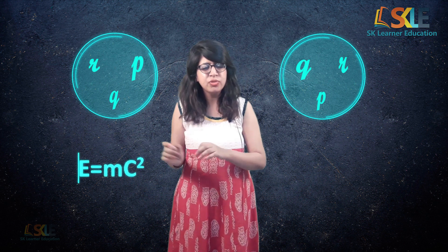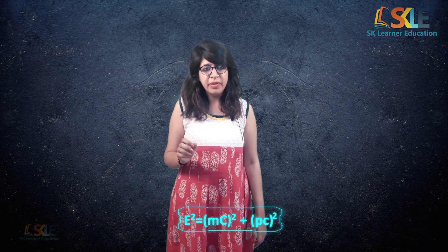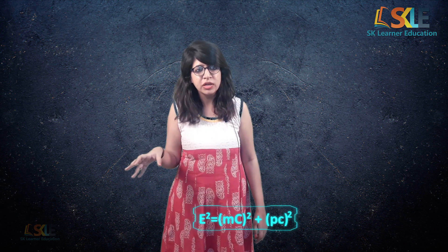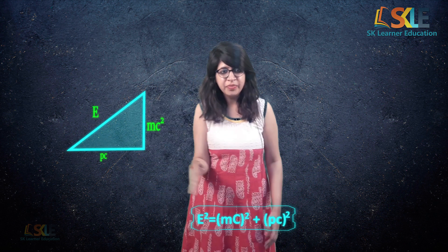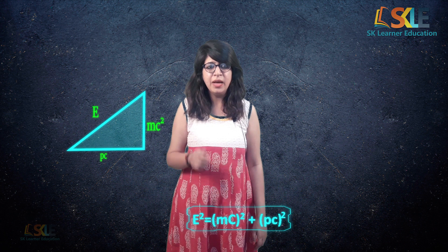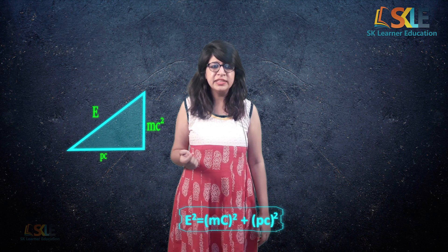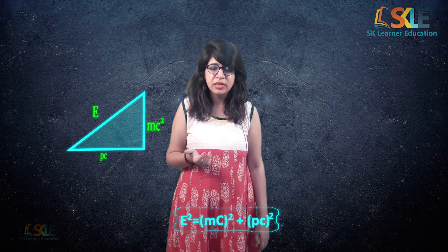Is E equals mc squared a complete equation? No. The exact equation is E squared equals m squared c to the fourth plus p squared c squared. From this equation we know that momentum also plays a role in defining energy. You can also express this using the Pythagorean theorem, where E is the hypotenuse and the other sides are pc and mc squared.